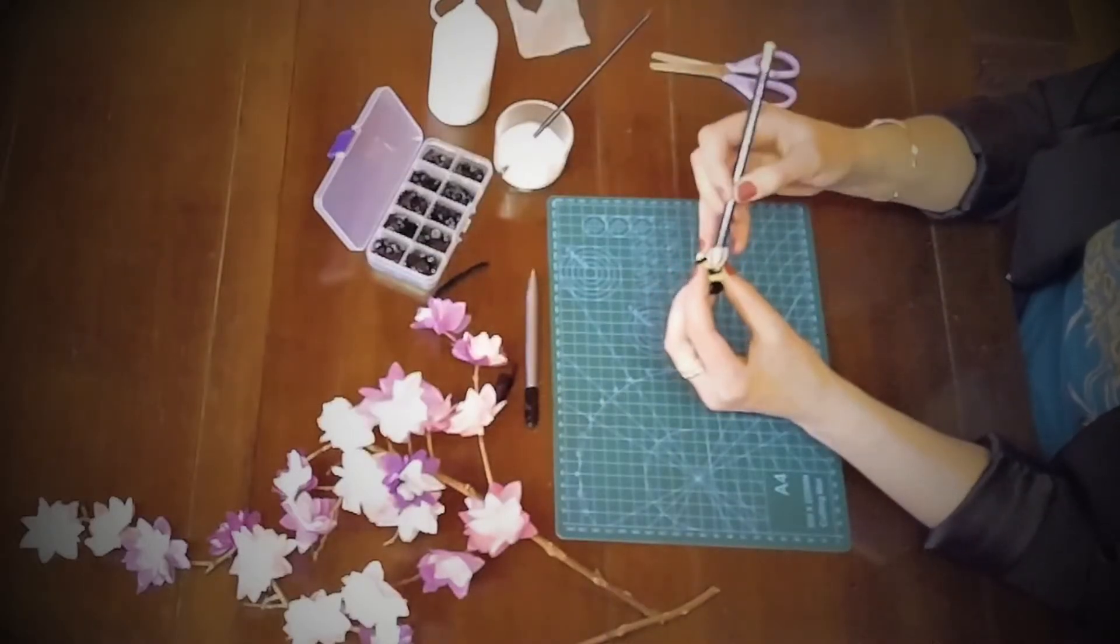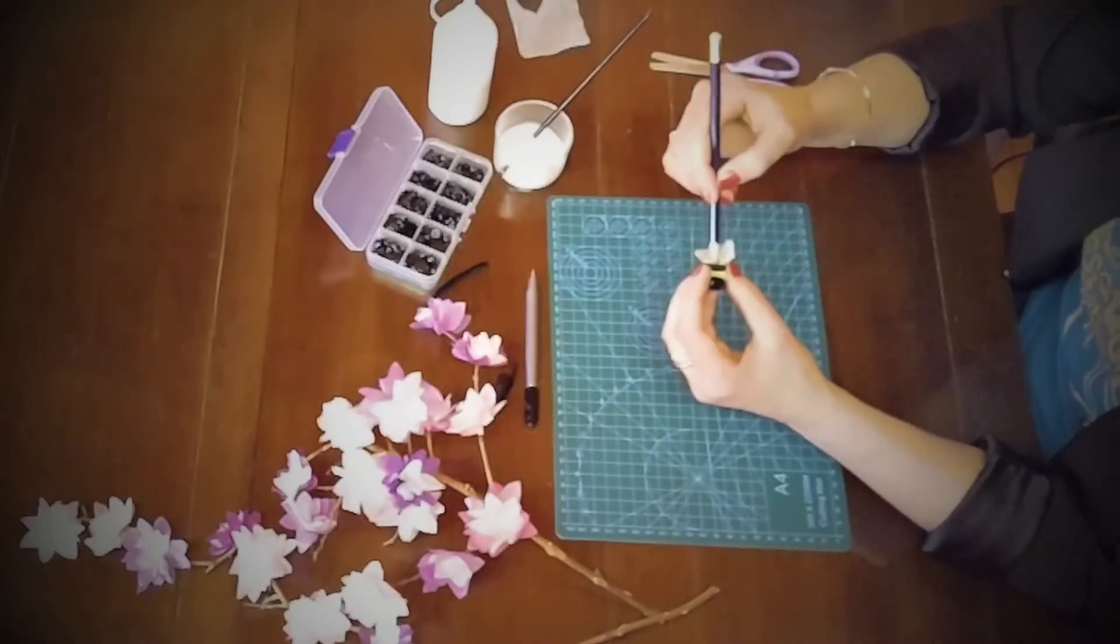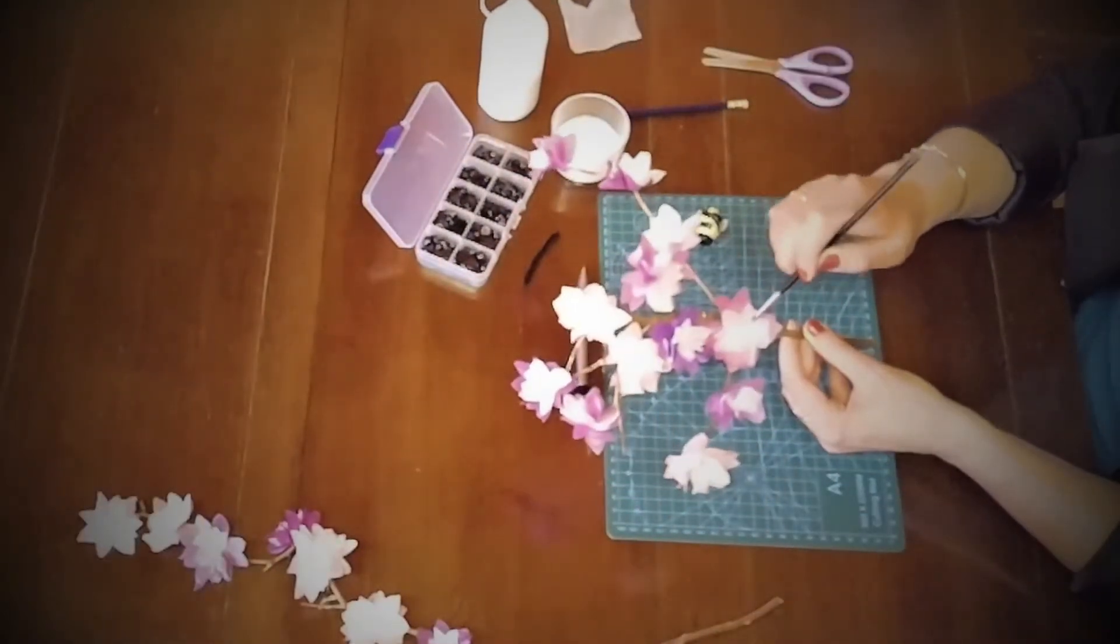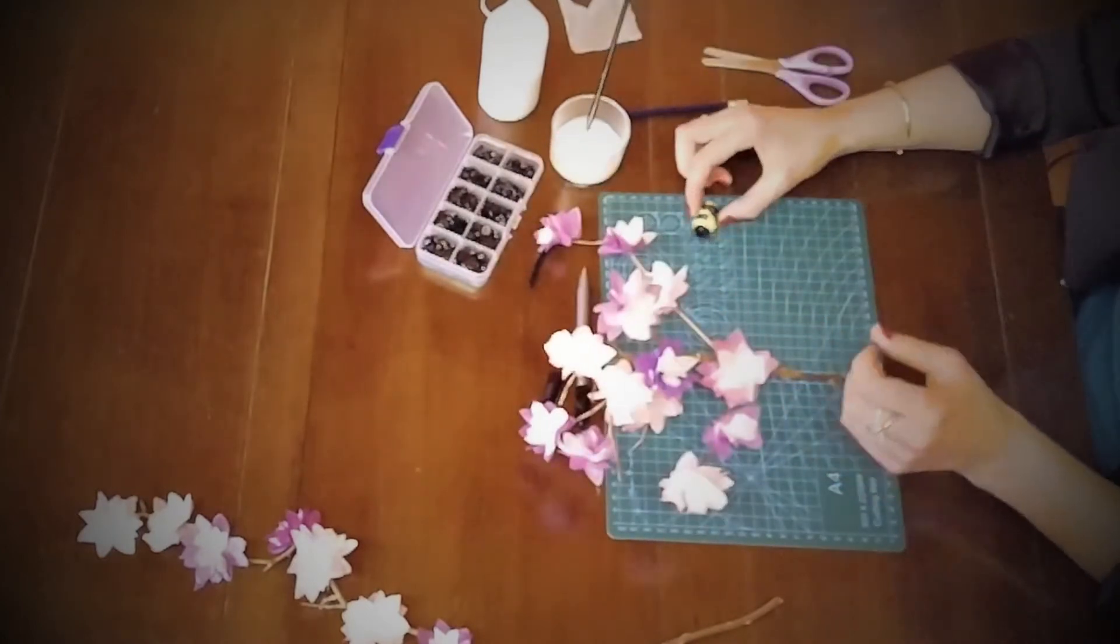Next use a pencil to gently push the wings under the pipe cleaner nearest the head. Now your bee is complete. Glue him onto one of your flowers and carry on making more bees to add to your display.